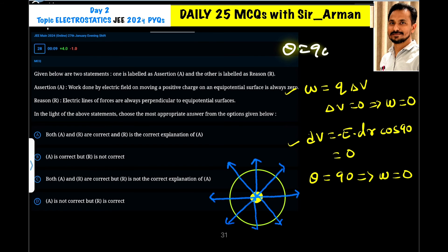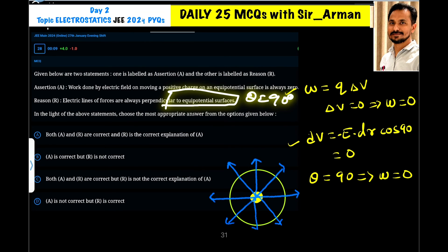Here electric field lines of force are perpendicular to the equipotential surface. That is, the theta is 90 and that is why the work done is also zero. Hence, we can say assertion and reason both are correct and reason is the correct explanation.